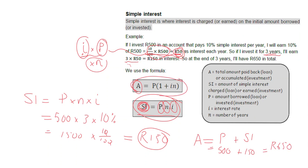The formula says: to get the total amount (A), take the amount originally invested (P) and add P × I × N, which is your simple interest. Key vocabulary: A is the accumulated amount — the total you have after the investment period. SI is the simple interest earned. P is the principal — the amount borrowed or originally invested. I is the interest rate as a percentage, and N is the number of years.